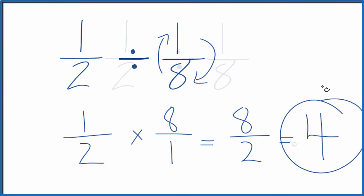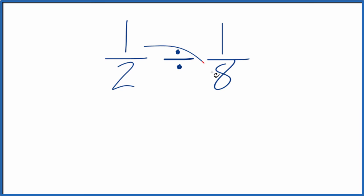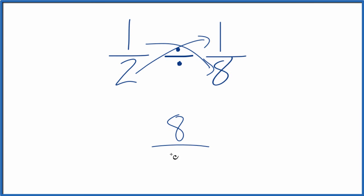There is one other way we could do this. We could take 1 times 8, that would give us 8. And 2 times 1, that would give us 2. And 8 divided by 2, that's 4. So same thing we got before.